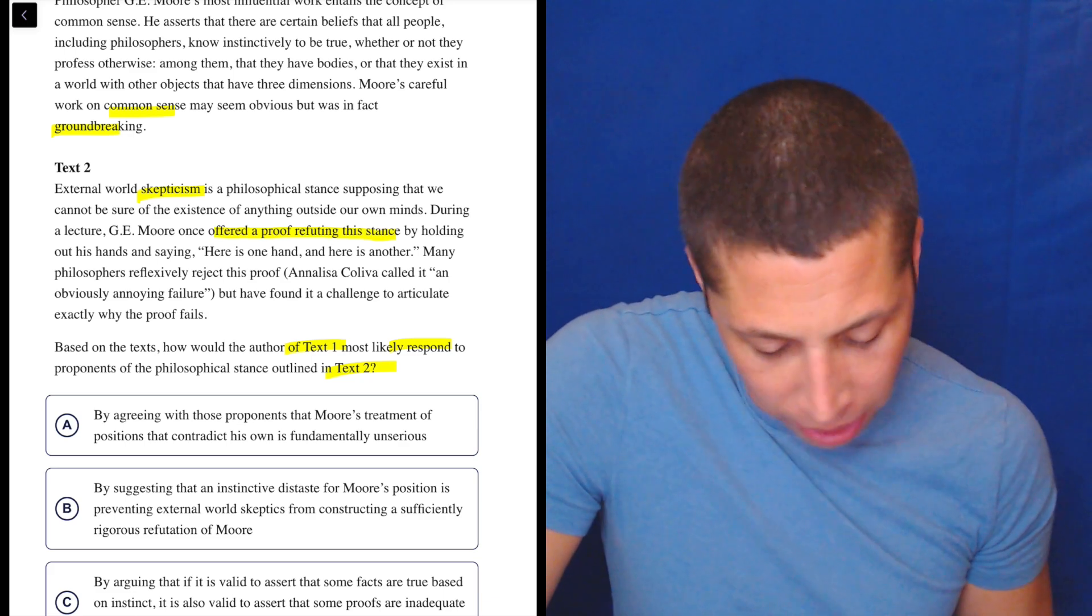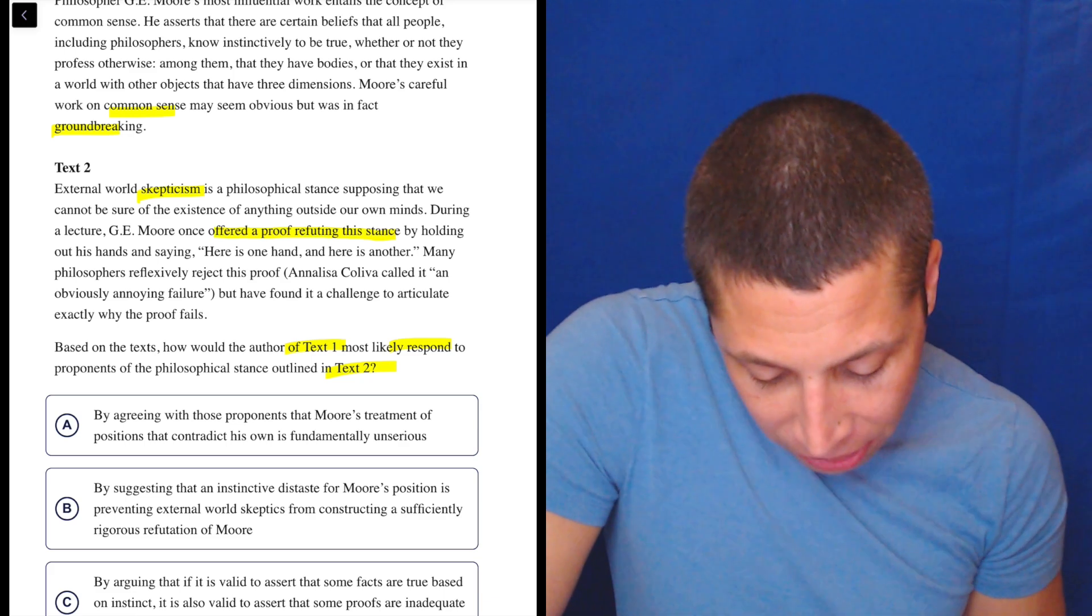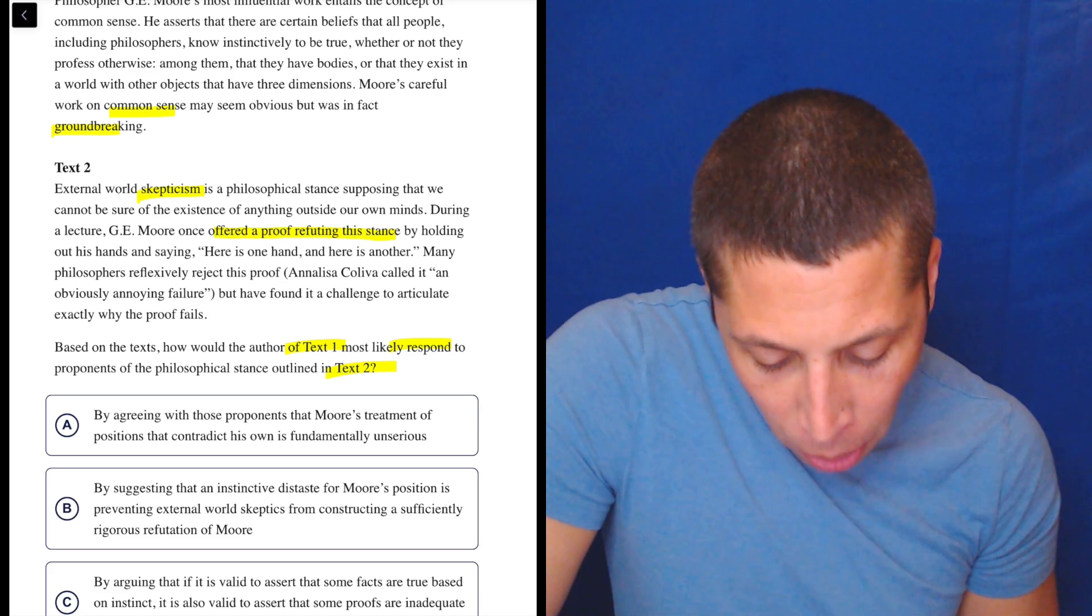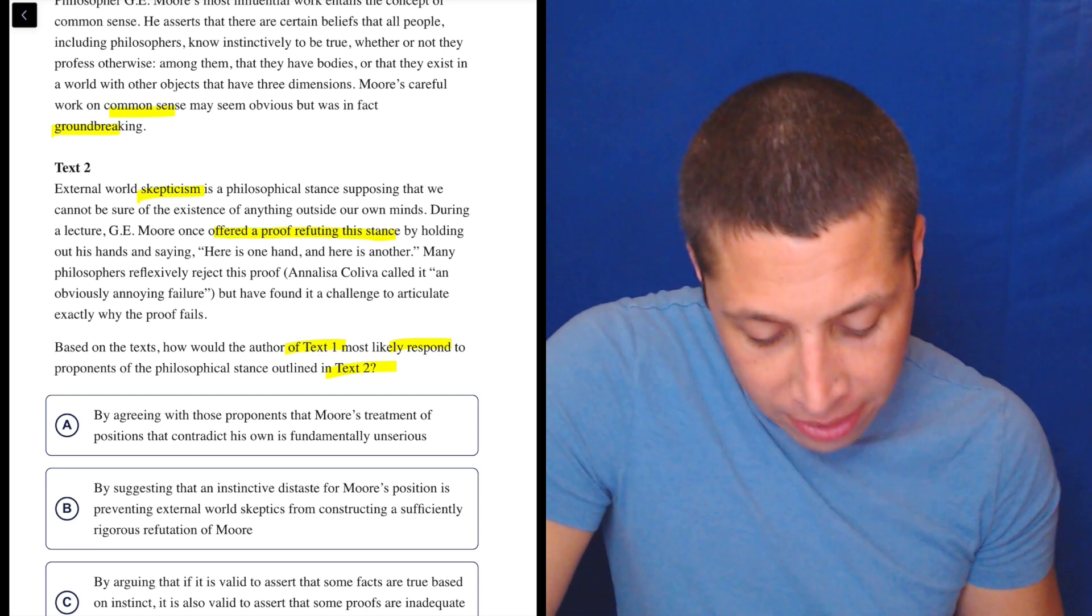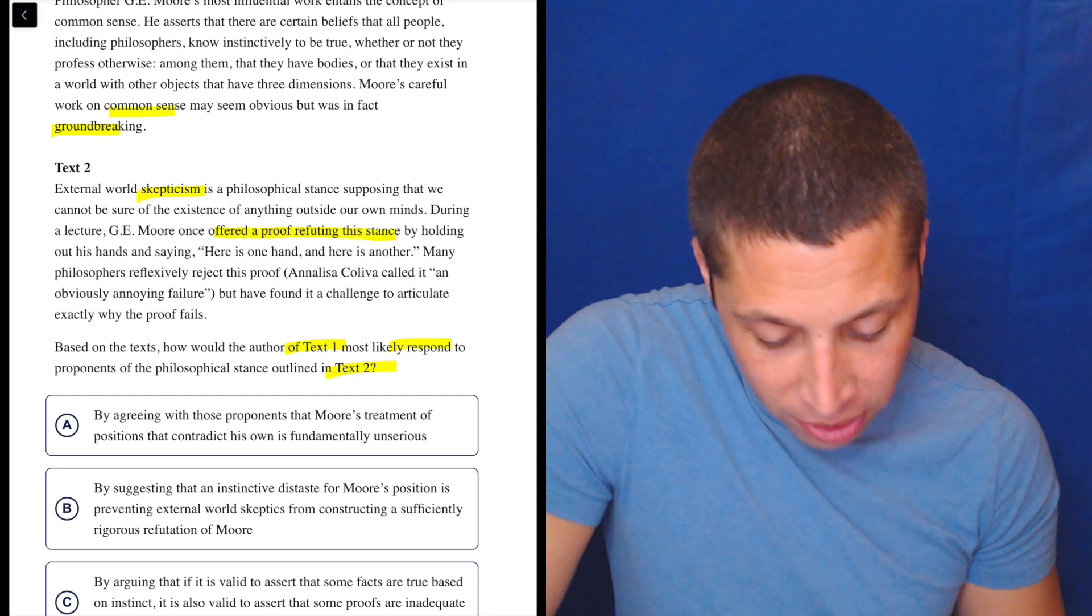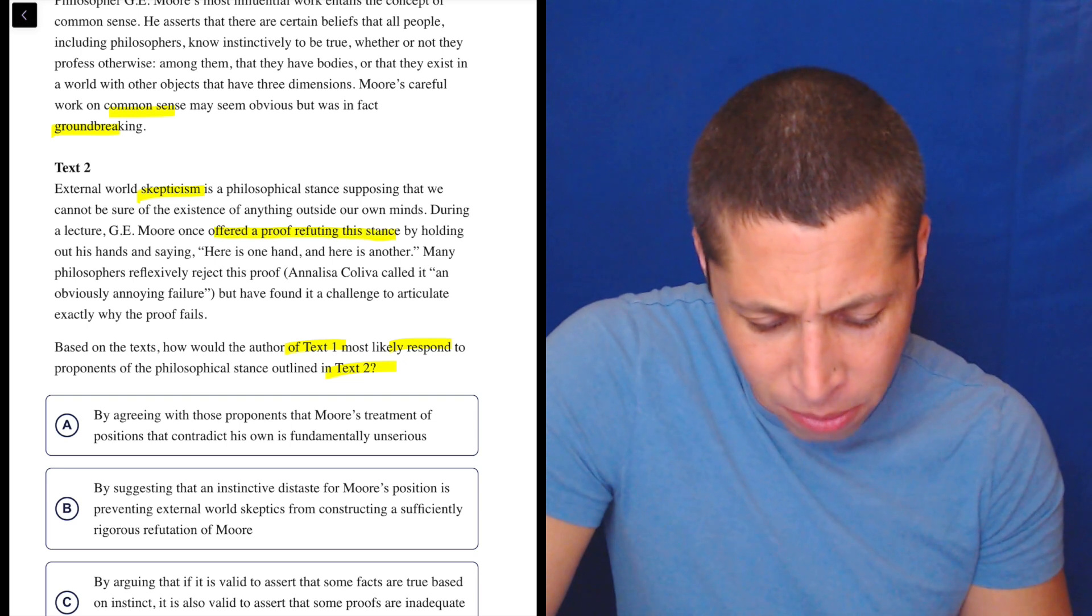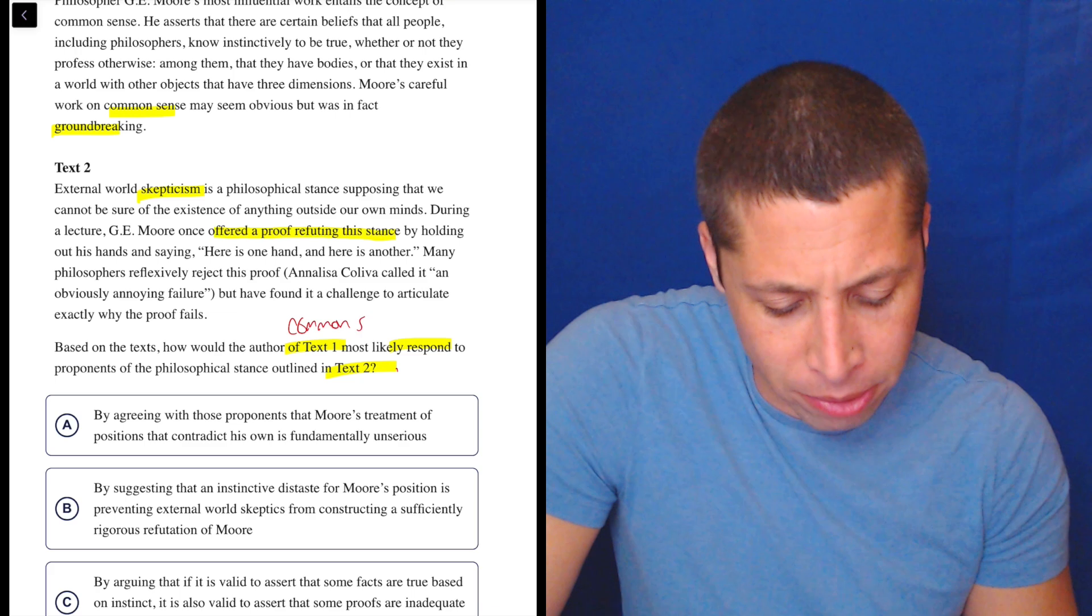I'm really, so, okay. Oof, I'm confused. Based on the text, how would author of text one respond to the proponents of the philosophical stance, meaning the skepticism stance? I guess they would just say there's common sense. I don't know. Because text one is about that? I have no idea where this is going.